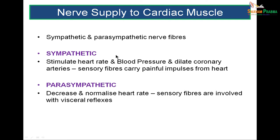Cardiac muscle is supplied by the autonomic nervous system — sympathetic and parasympathetic. The sympathetic stimulates the heart rate, increases blood pressure, dilates coronary arteries, and carries sensory fibers of pain from the heart. The parasympathetic decreases and reduces the heart rate. Sensory fibers here are involved with visceral reflexes.